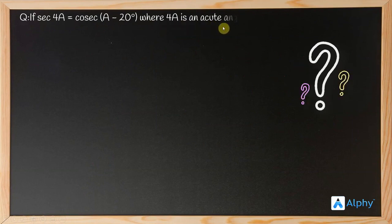The question is: if sec 4A equals cosec(A minus 20 degrees), where 4A is an acute angle, find the value of A. Let's take a look at the solution.